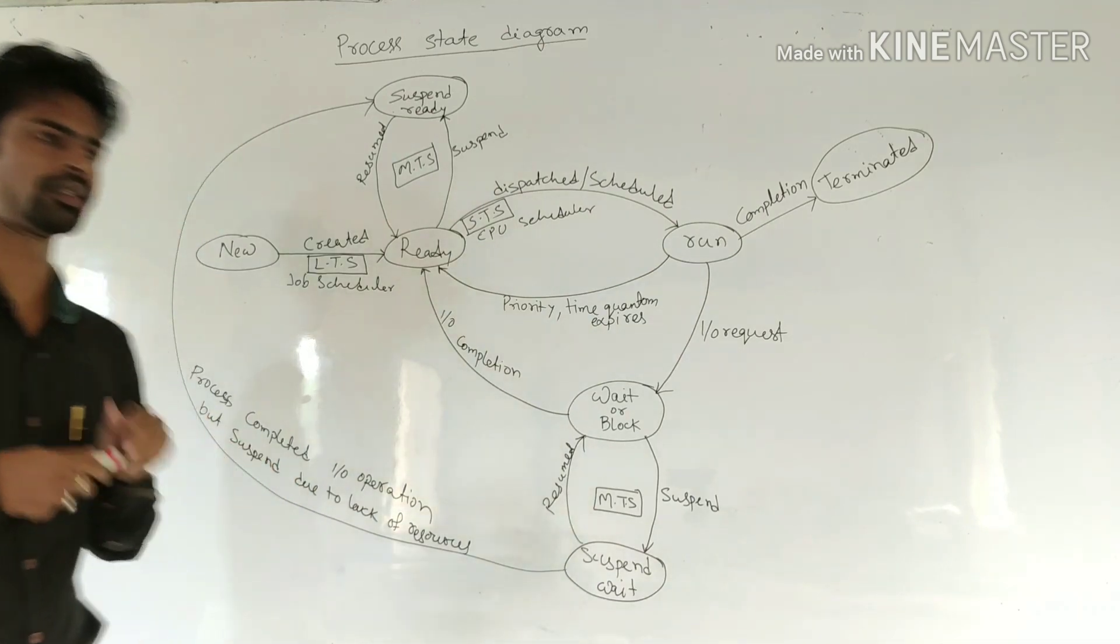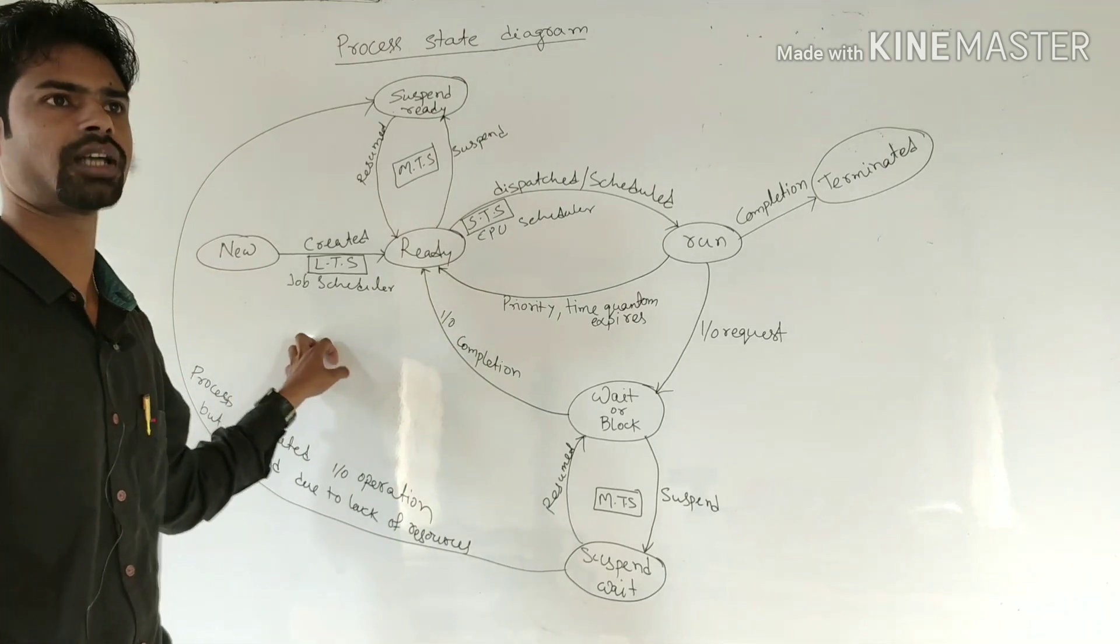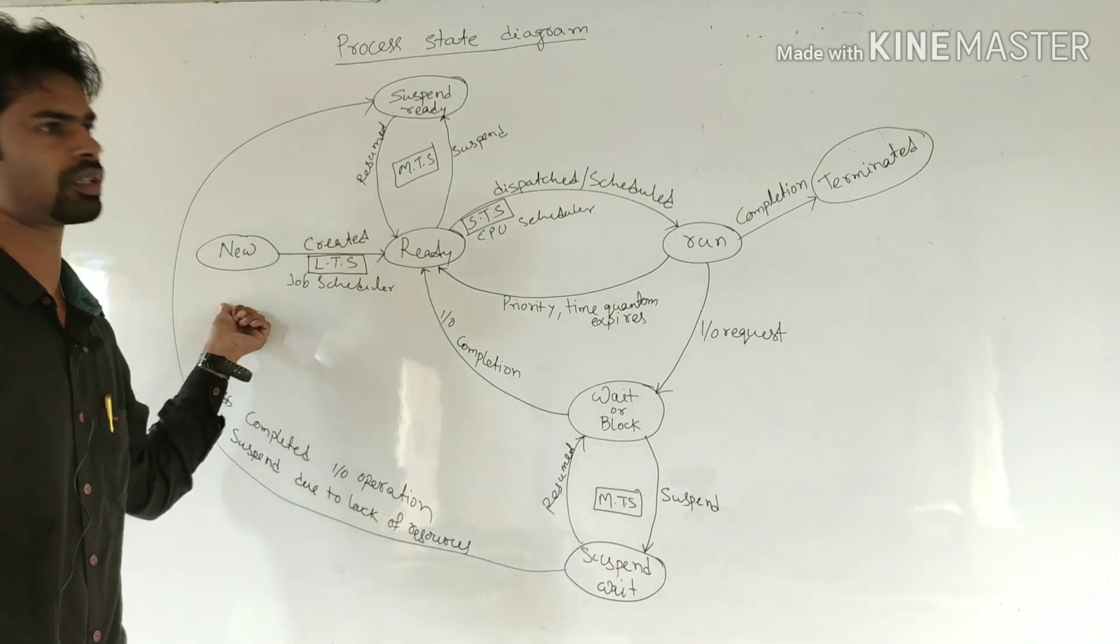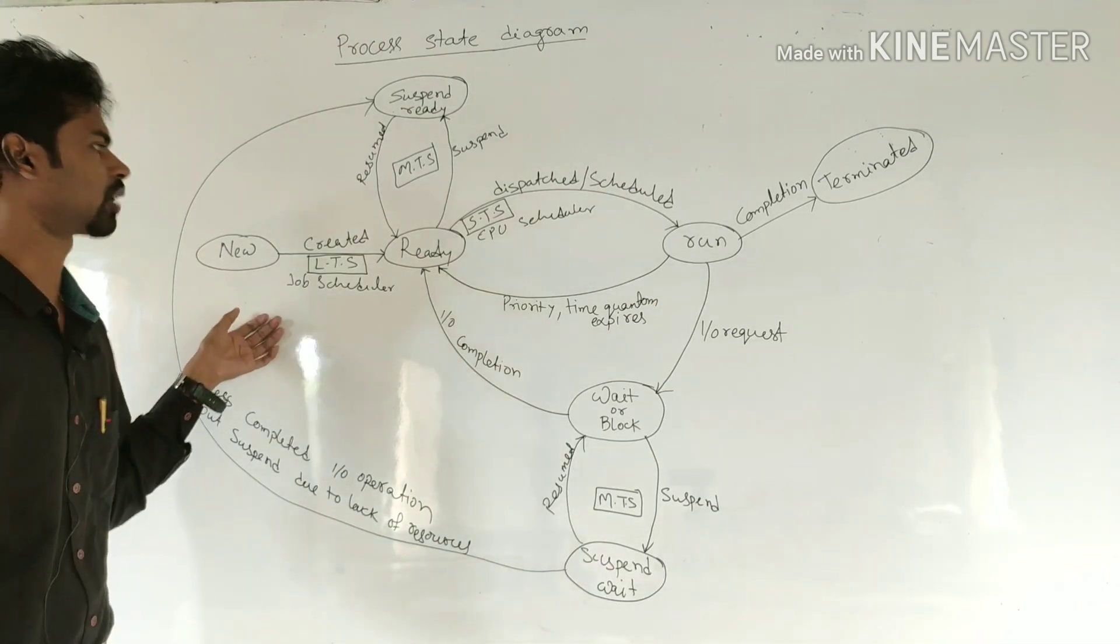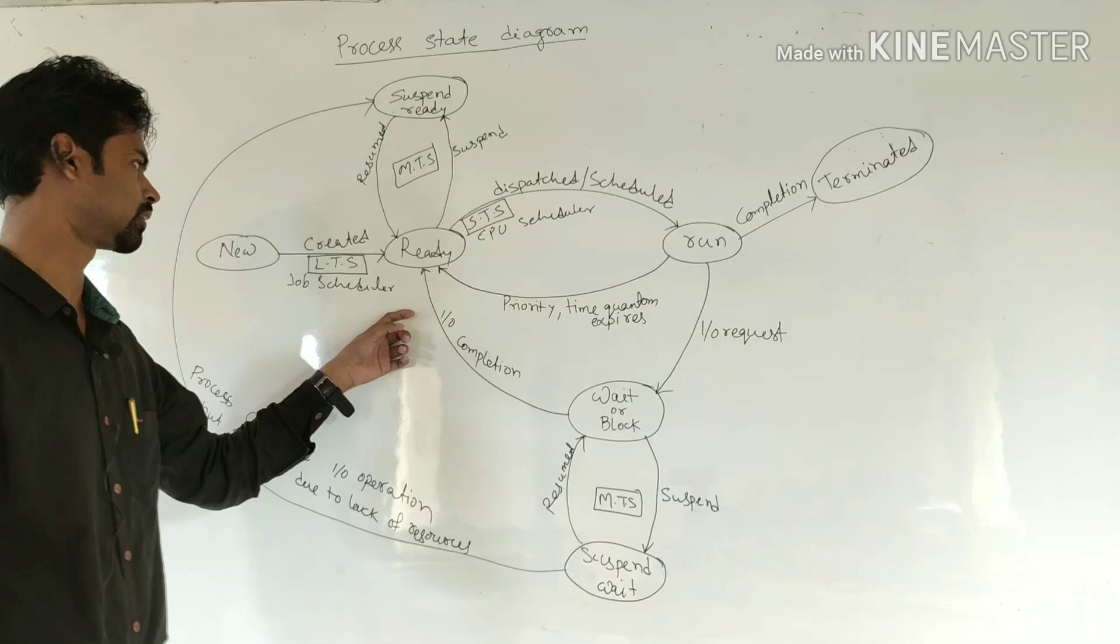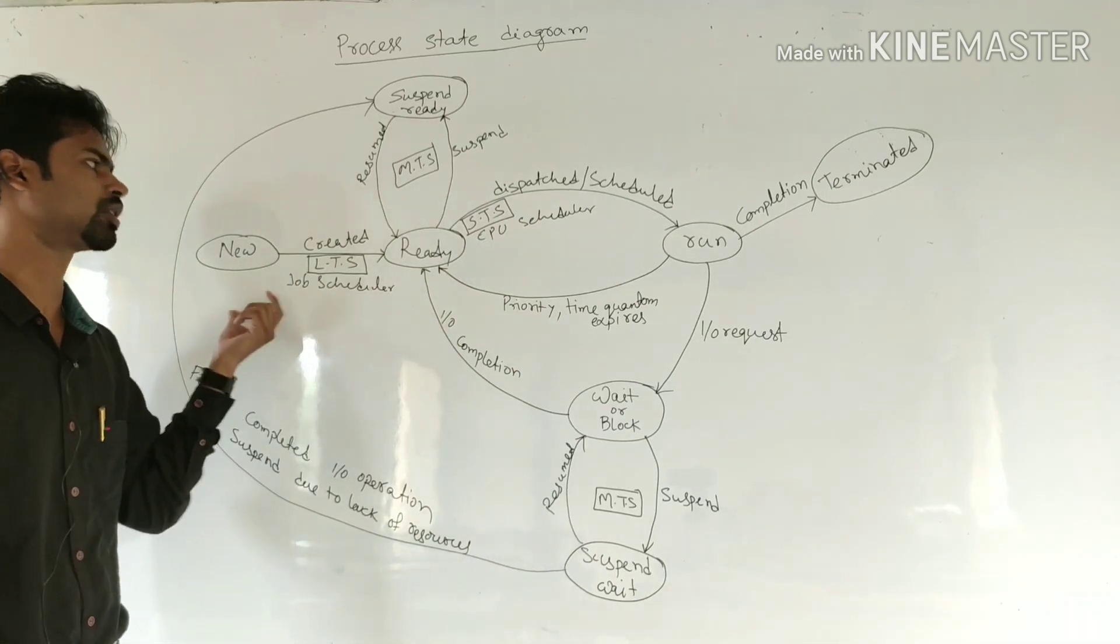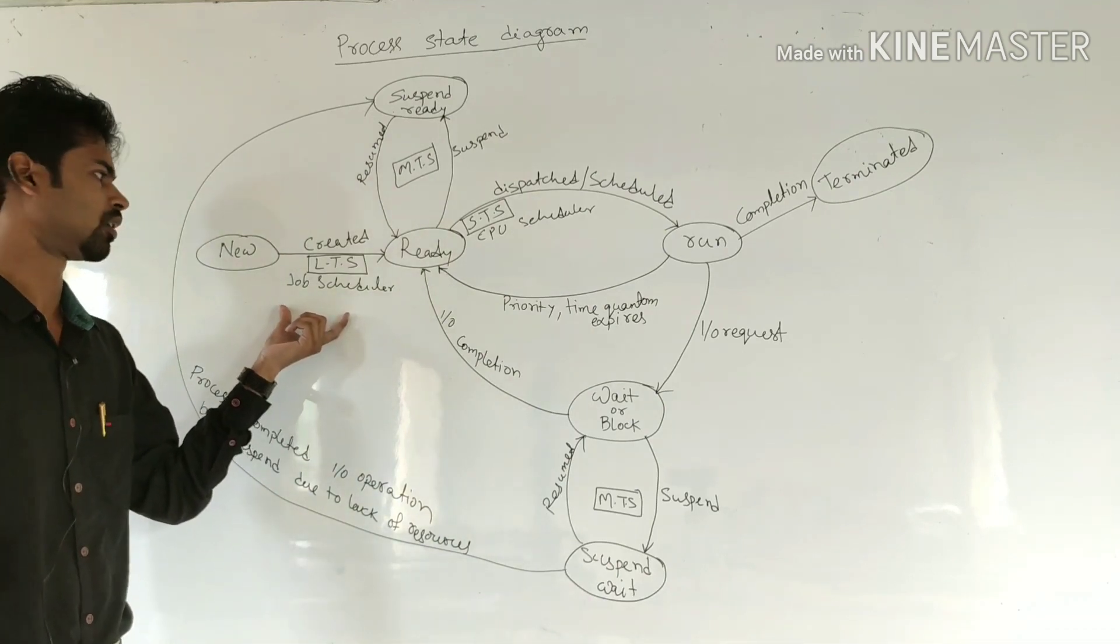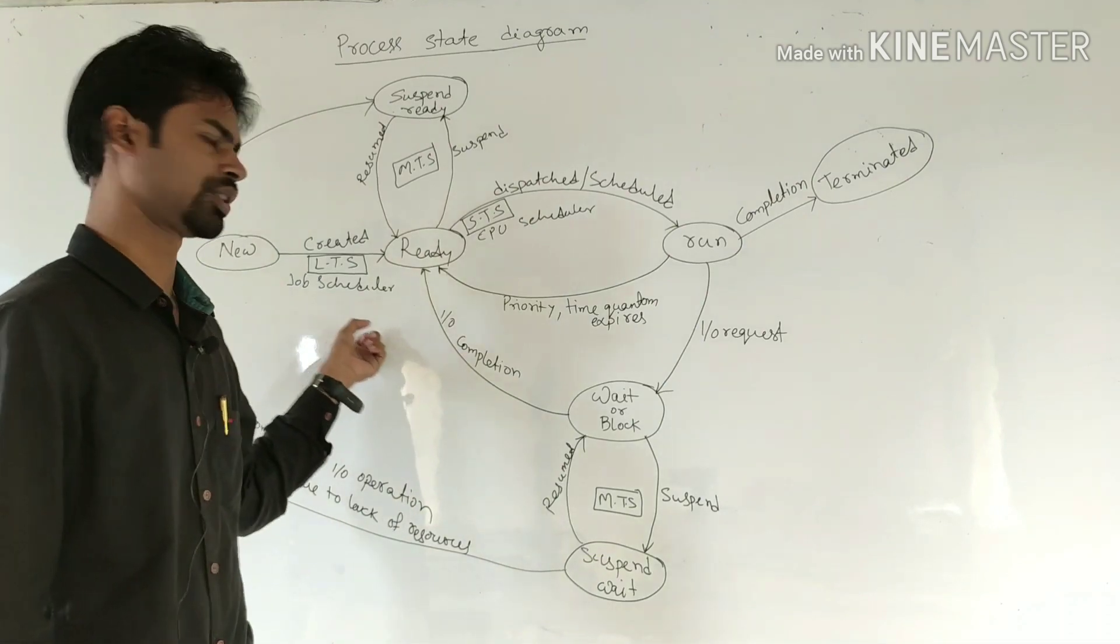When a process is in creation state, the process is in new state. After creation, the process is transferred to ready state. Moving process from new state to ready state is the work of long-term scheduler, also called job scheduler.